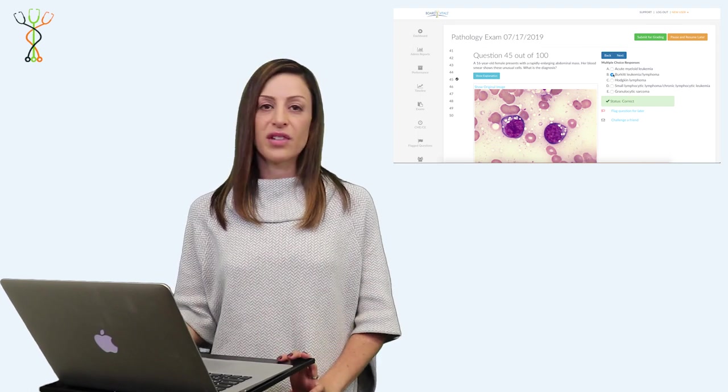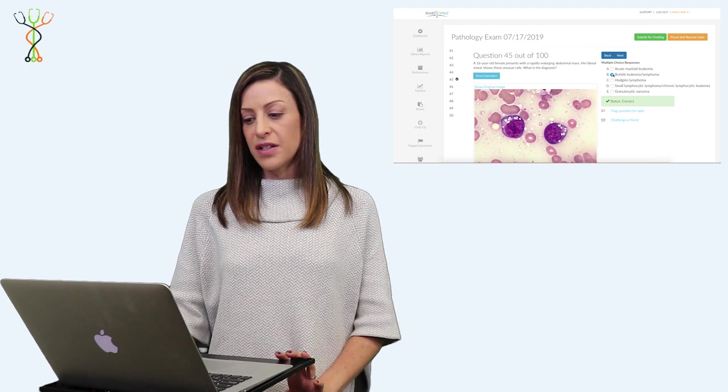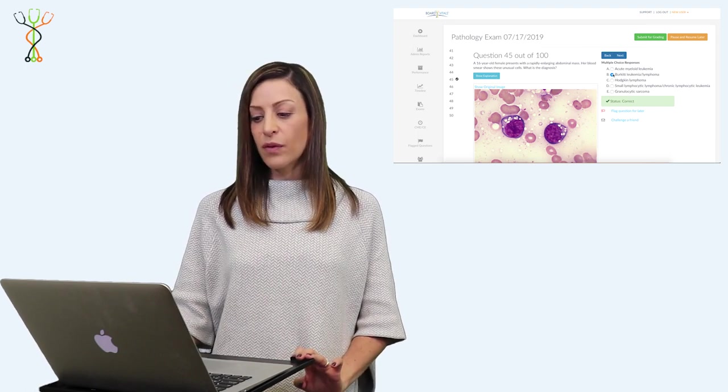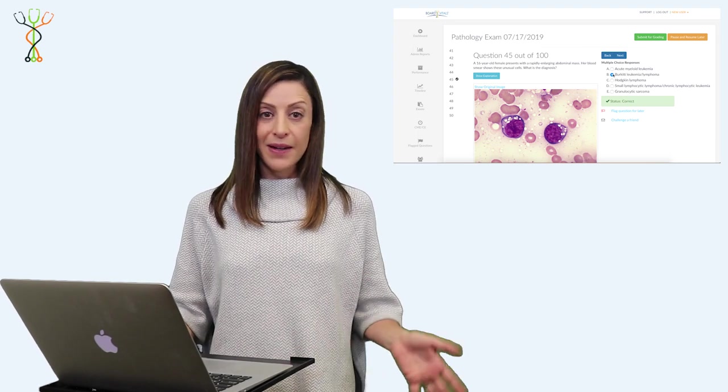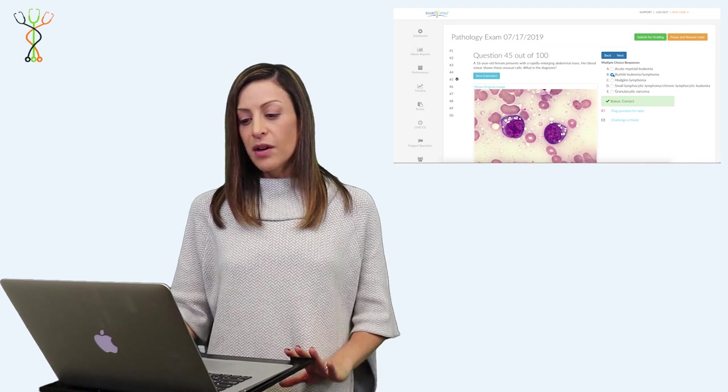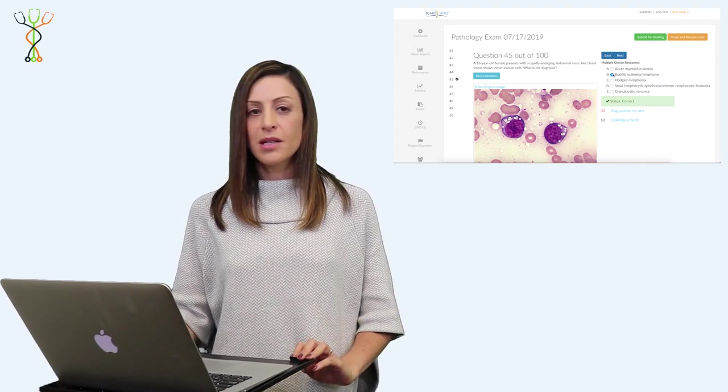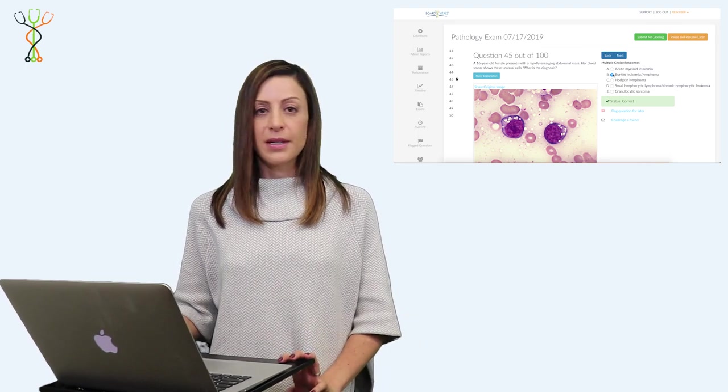The endemic form is found mostly in Africa and New Guinea. Sporadic is seen here in the United States and Western Europe. The immunodeficiency type is seen in patients with HIV but also other immunodeficiencies such as transplant recipients and other immunocompromised situations.